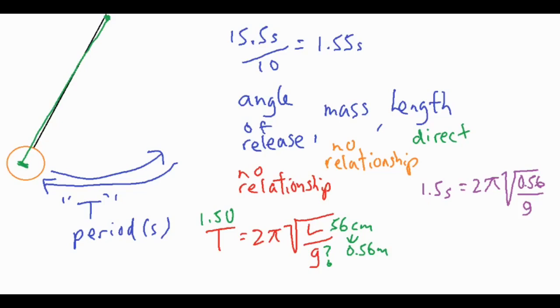Then we can go ahead and solve for little g. What we can do is divide both sides by 2π, and then we could square both sides to get rid of that square root.